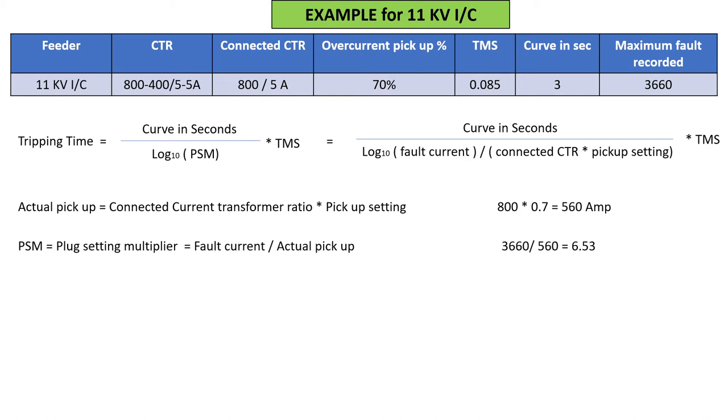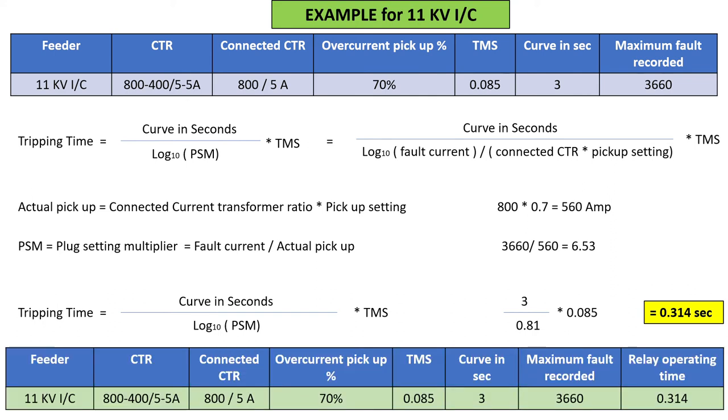Now PSM: fault current is 3660 ampere and our pickup is 560 ampere, so PSM is 6.53. To find tripping time, we take log of PSM with base 10 - that is log of 6.53 with base 10. Please make sure it's log, not ln. Our value is 0.81. Tripping time equals curve selected (3 second very inverse) divided by 0.81, multiplied by TMS 0.085. So tripping time is 0.314 seconds. Please pause the video and do it yourself for practice.